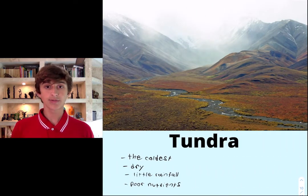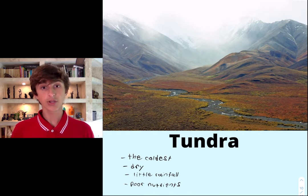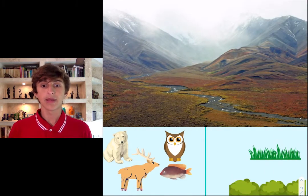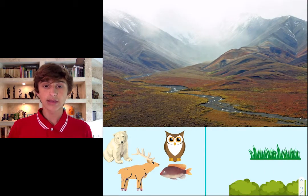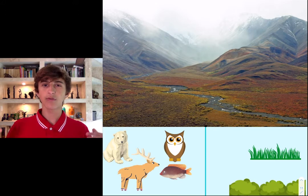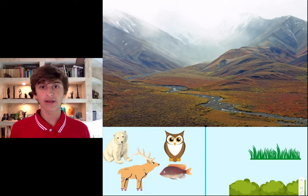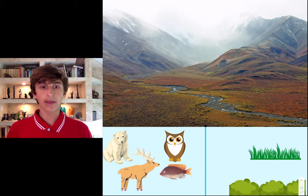In the tundra, it's probably the coldest biome — very dry with little rainfall and poor nutrients in the soil, making it pretty rough to live in. Plants there are mostly shrubs and grass, and they can't grow very tall because the soil underneath is mostly frozen. Animals like the owl, reindeer, and polar bear survive by having fur or feathers to keep them warm. Fish live in the water and also provide food for animals like the polar bear.